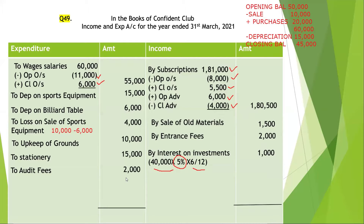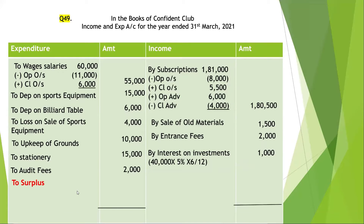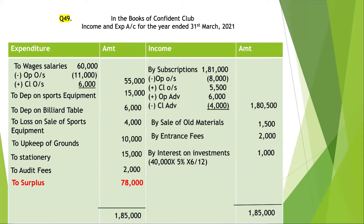Sports equipment, the 5% investment, and closing cash and bank balance will all be reflected in the closing balance sheet. After totaling both the income side and expenditure side and adjusting, we get a surplus of rupees 78,000. The total of the Income and Expenditure account is rupees 1,85,000.